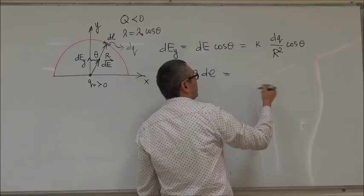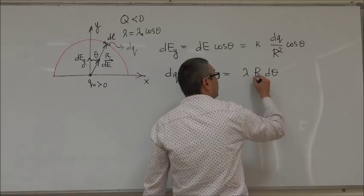On the other hand, we also know that DL is equal to R D theta. So, we can say lambda R D theta. So, this is DL.